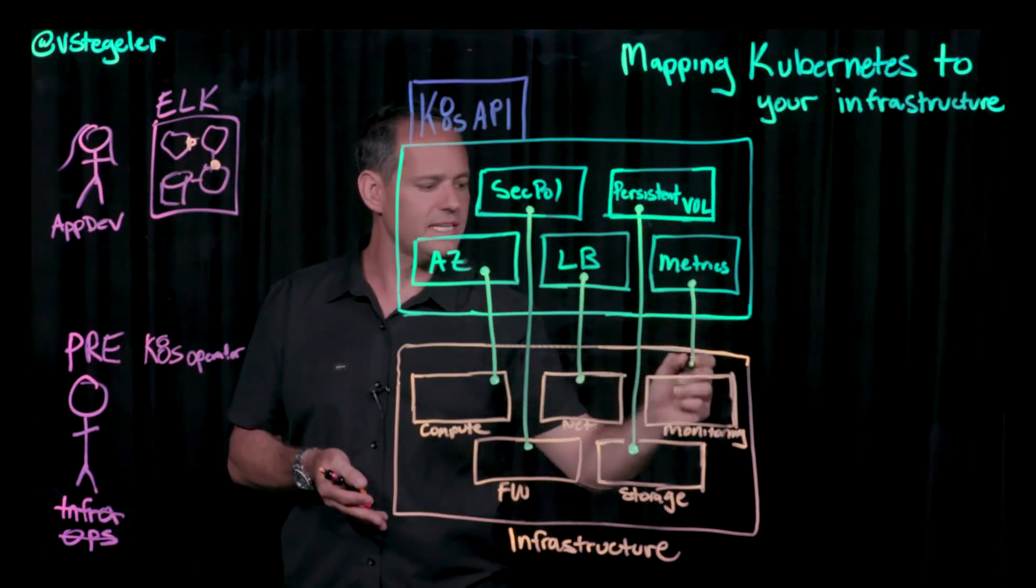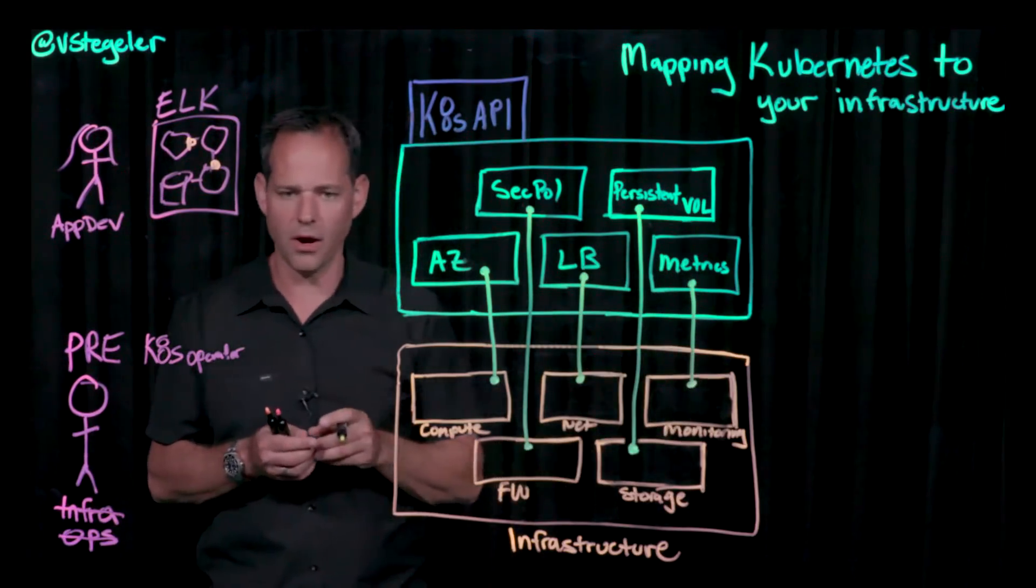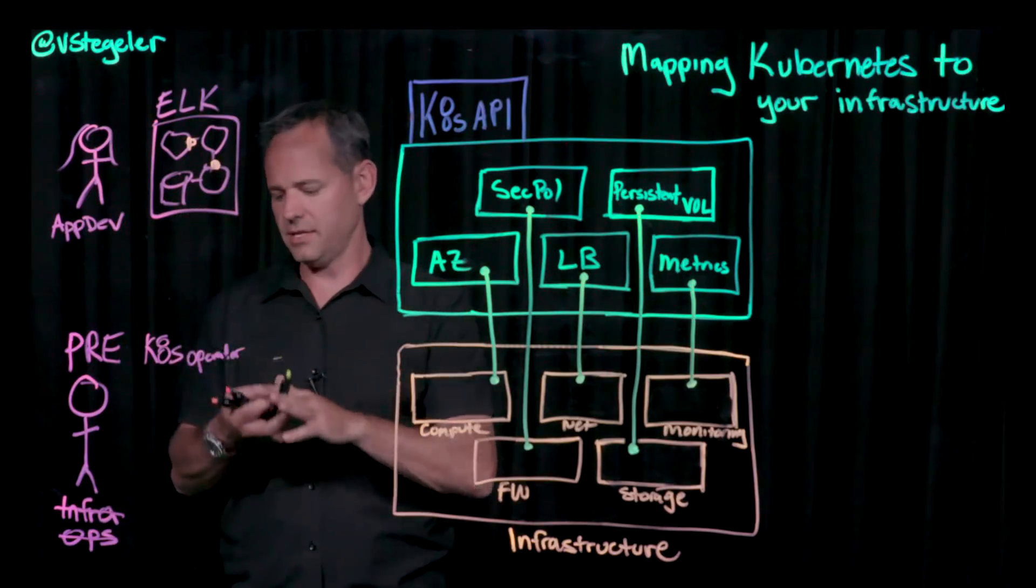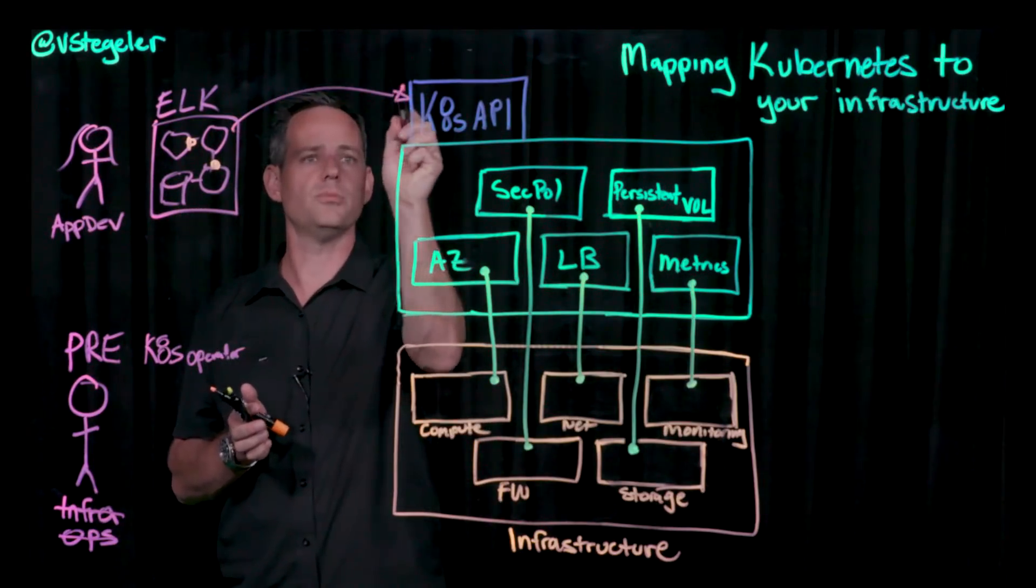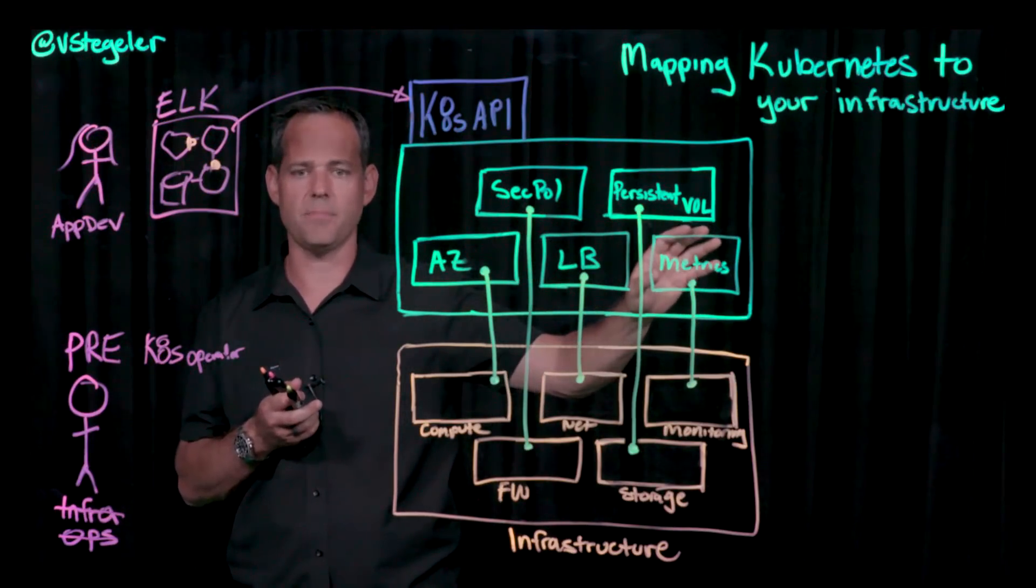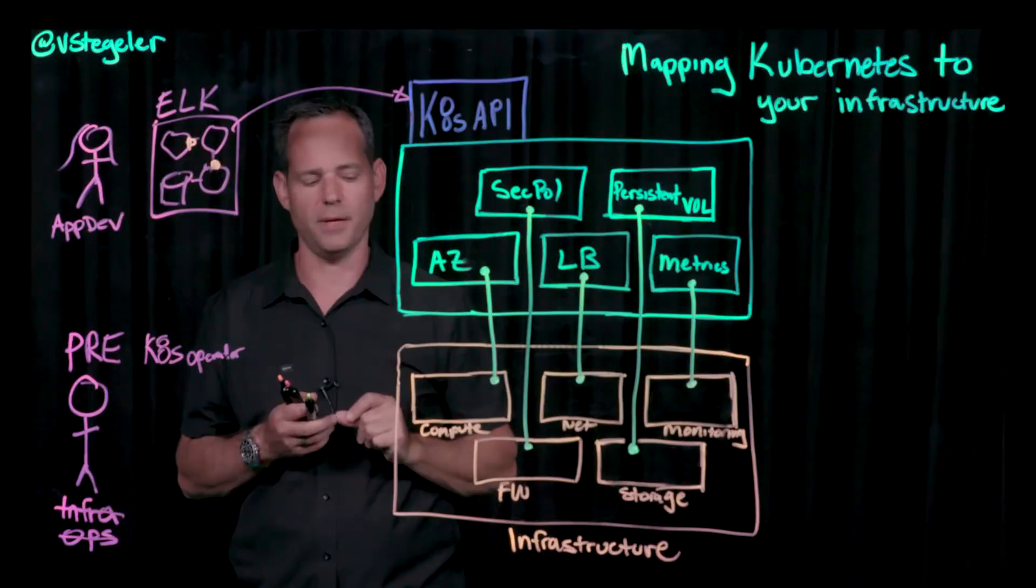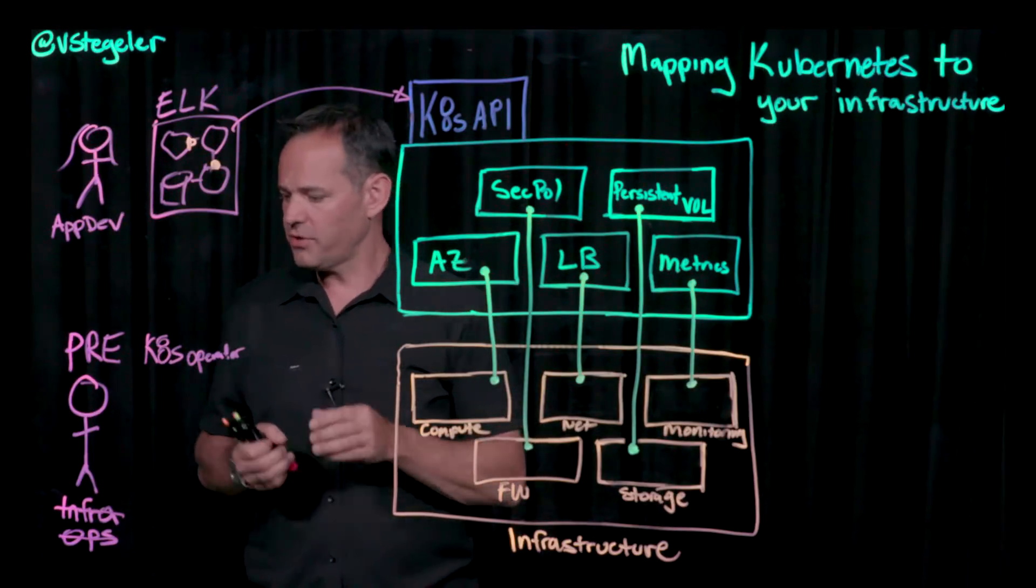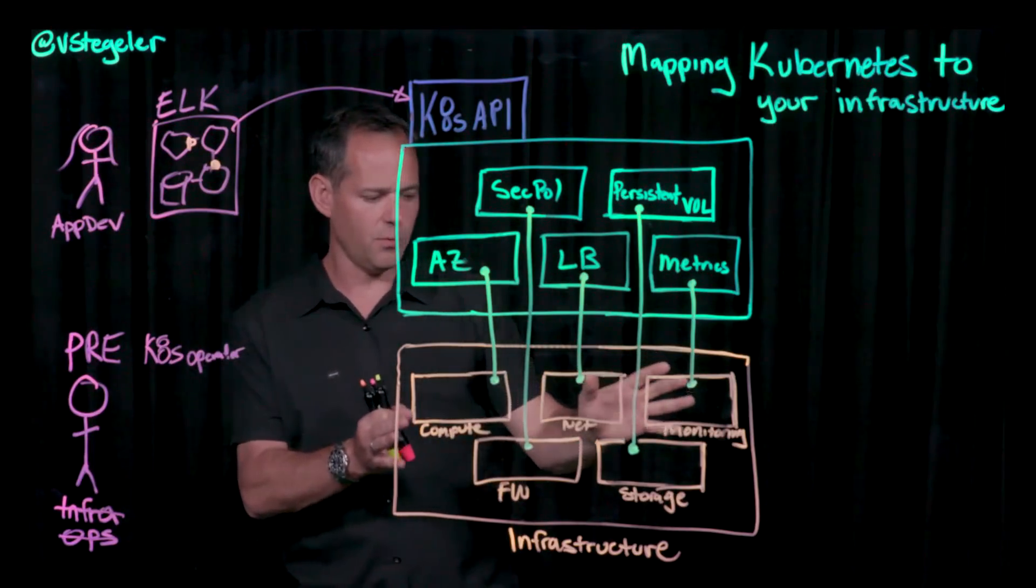Load balancing, same thing. And then metrics. What's going to be an easy way where maybe as I deploy this ELK stack into Kubernetes, by just defining the fact that I need some metrics, it will automatically happen for me.